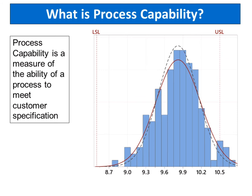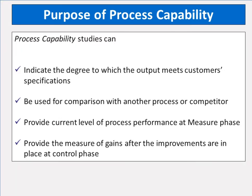Process capability is a measure of the ability of a process to meet customer specification. It is defined as a statistical measure of the inherent process variability of a given characteristic. Process capability studies can indicate the degree to which the output meets customer's specifications, be used for comparison with another process or competitor, provide the current level of process performance at the measure phase, and provide a measure of gains after improvements are in place at the control phase.